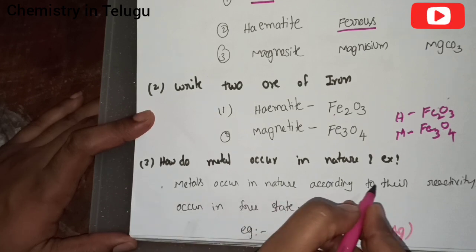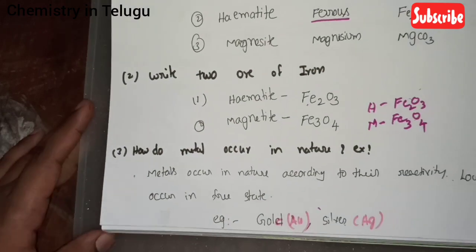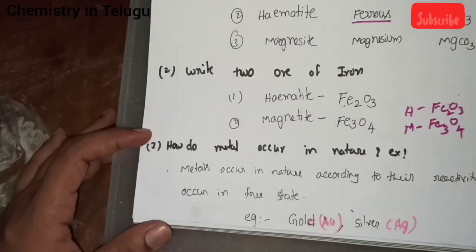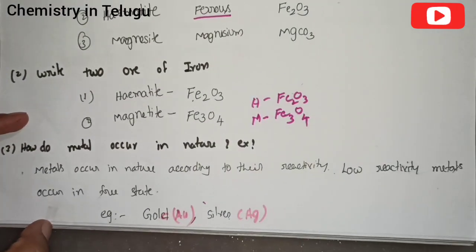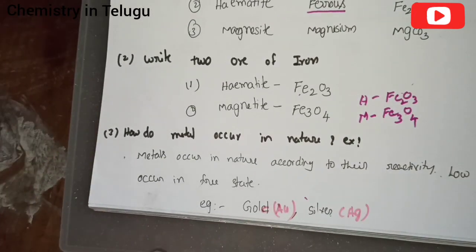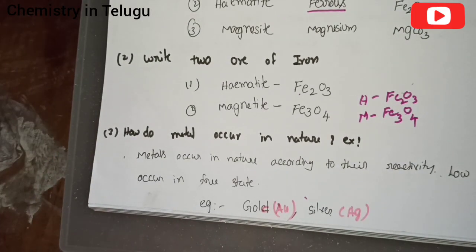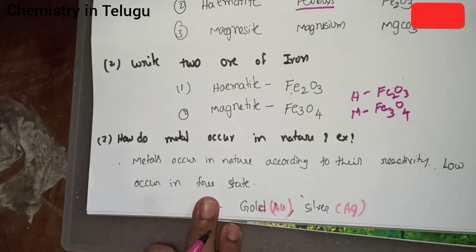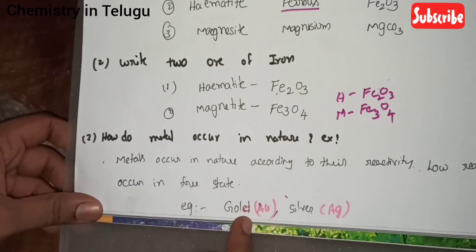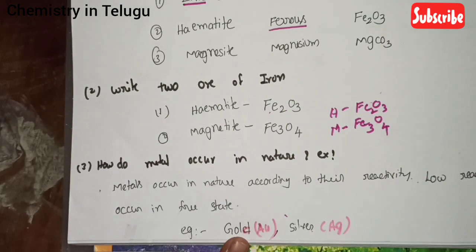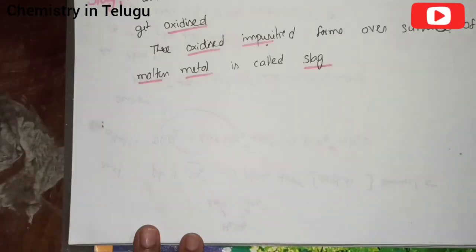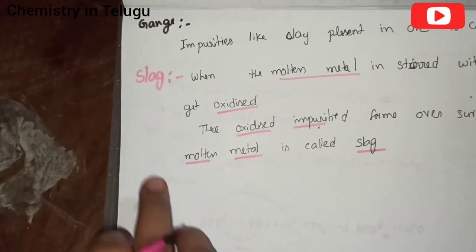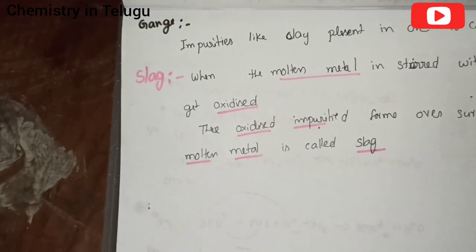Metals occur in nature according to their reactivity. Lowly reactive metals occur in the free state. For example, gold and silver occur in their free state in nature.